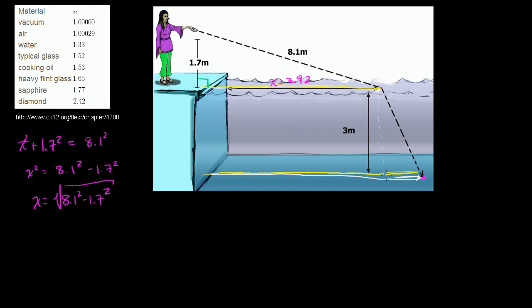Now we just have to figure out the incremental distance underwater, add it to x, and we'll know the entire distance. Let's think about the incident angle and the angle of refraction. I've dropped a perpendicular to the surface. Our incident angle is this angle right over here, and remember in Snell's Law we care about the sine of this angle.